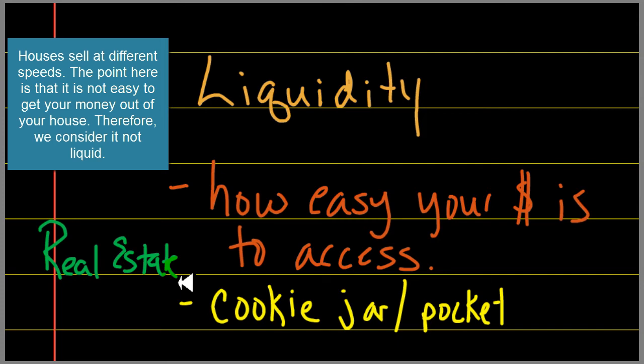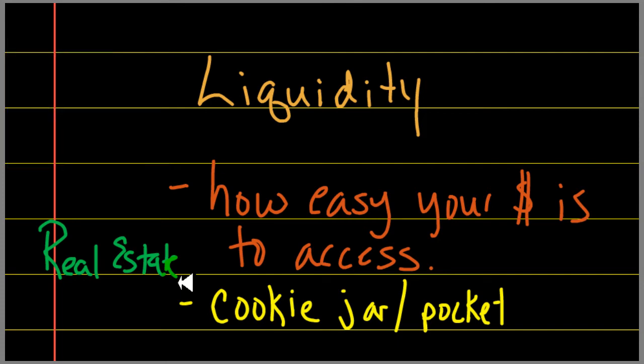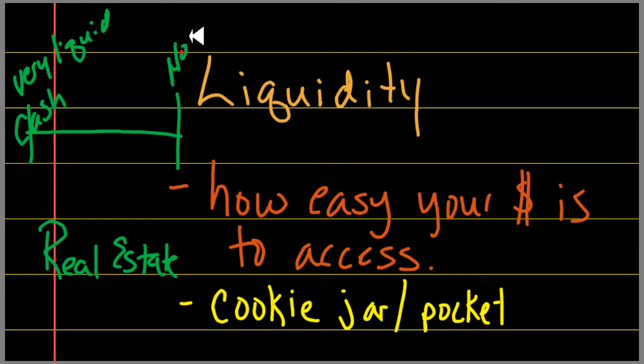There's kind of a continuum. So if this is very liquid over here, then this would be cash in your pocket. If this is not liquid on this side, then this might be real estate over here. Obviously there's stuff in the middle: mutual fund, money market, those types of things. But liquidity is how easy it is to get your money, and there may be some examples of that on the test.